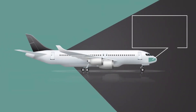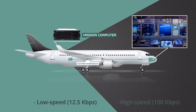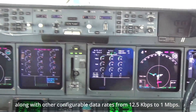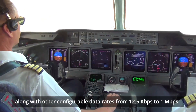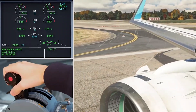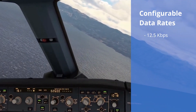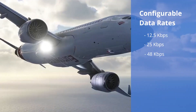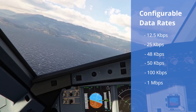Data transmission of this ERINC-429-IP Core supports both low-speed 12.5 kbps and high-speed 100 kbps data rates, along with other configurable data rates from 12.5 kbps to 1 Mbps. Configurable ERINC-429 data fields support the configurable data rates 12.5, 25, 48, 50, 100 kbps, and 1 Mbps.